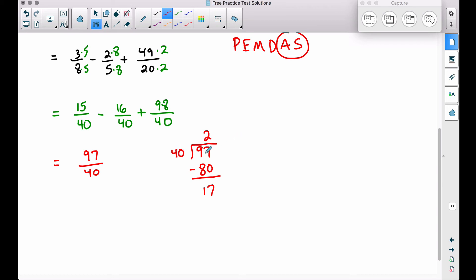Therefore, we said forty goes into ninety-seven two whole times with a remainder of seventeen, and we put this over forty. This is going to be our mixed number. That's the same thing as this improper fraction.